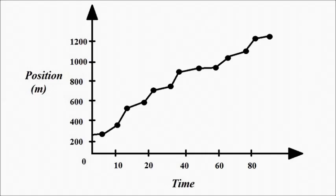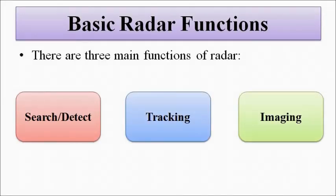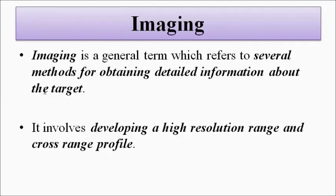Search and detect and tracking, and then we have imaging. Imaging we've already discussed, but we'll discuss it a little bit more. Imaging is basically a general term applied to several methods where we can obtain information about the range and angular position of the target. We've already discussed resolution, range resolution, cross-range resolution—please watch the previous videos where I discussed accuracy, signature, range resolution, angular resolution, or cross-range resolution in detail.